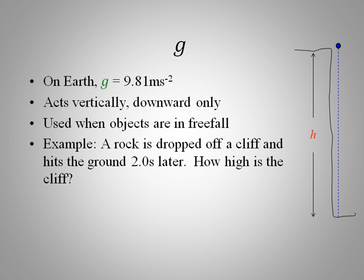And we're going to use this value for acceleration when we have objects in free fall. For example, a rock is dropped off a cliff, hits the ground two seconds later. How high is the cliff? So those same equations of motion apply. But we're now in the vertical direction. So we have a distance here and we have a time. So what equation involves distance and time? What can we use? I'll let you pause your video if you want to work it out.